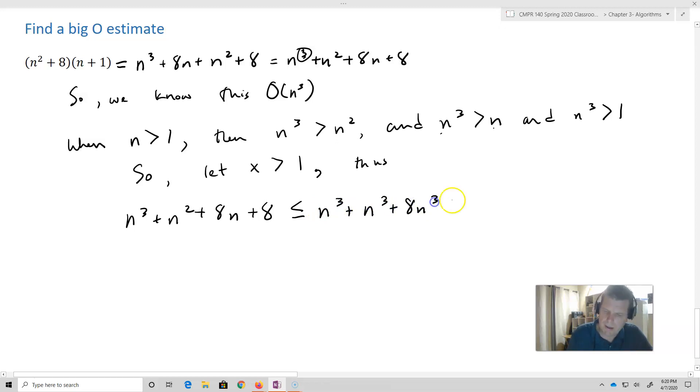Because at each step, we just replaced a smaller number with a bigger number, and so consequently, we've increased it.